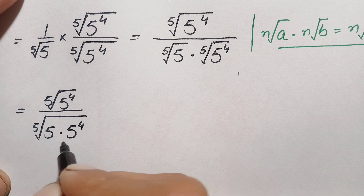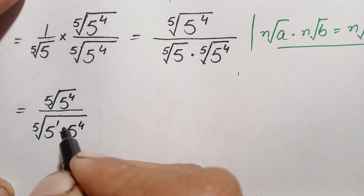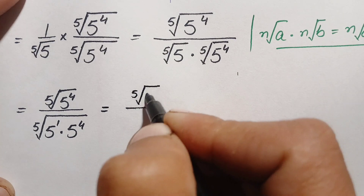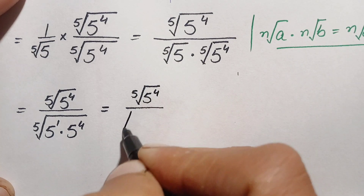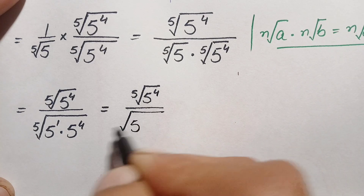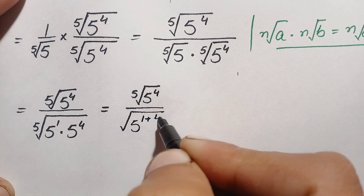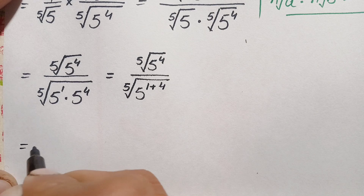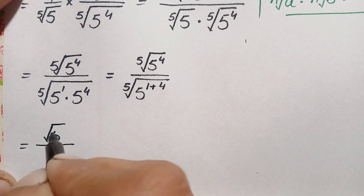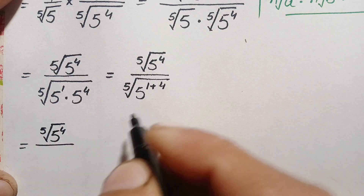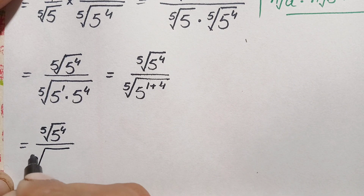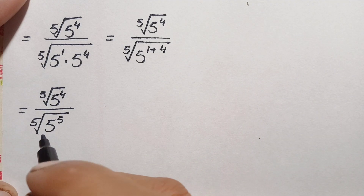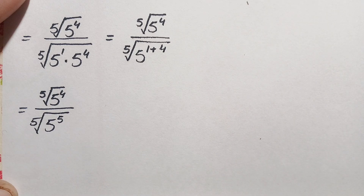These two numbers in the denominator have the same base, so we add their powers: one plus four equals five. The denominator becomes the fifth root of five raised to the power five. The numerator remains the fifth root of five raised to the power four. Now let's simplify: the numerator is five raised to the power four under the fifth root, and the denominator is the fifth root of five raised to the power five.